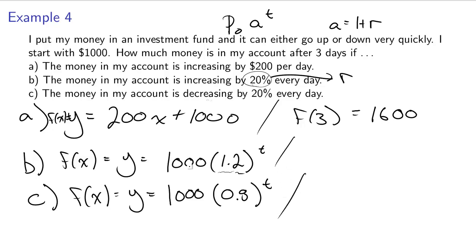And to figure out f of 3 in each of these last two cases, I would just plug in 3 into this value of t. I'd do that in my calculator. For this problem, you should get 1728, and for this problem, you should get 512.